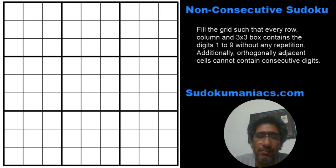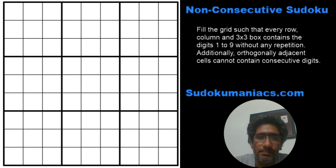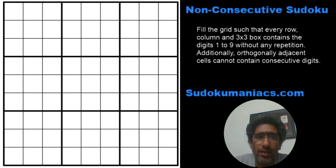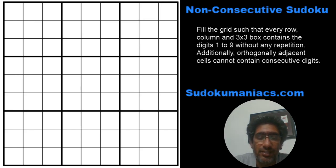Non-consecutive Sudokus are my second favorite after the anti-knights. I really enjoy solving these two variants. I'll try to share what I know. Maybe you can add in the comments if you have anything extra that can be used. Feedbacks and suggestions are always welcome — it's always a new learning if you can give us some.